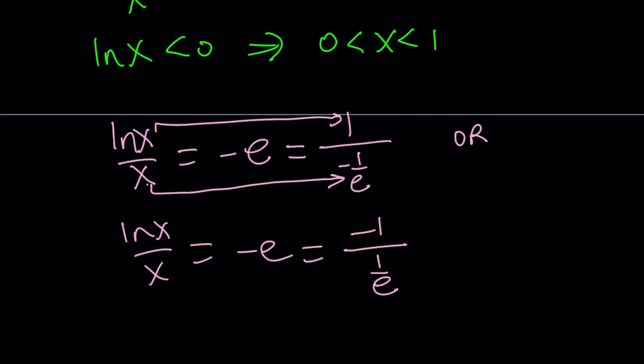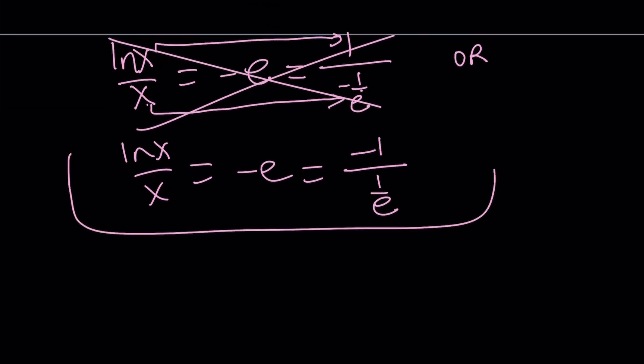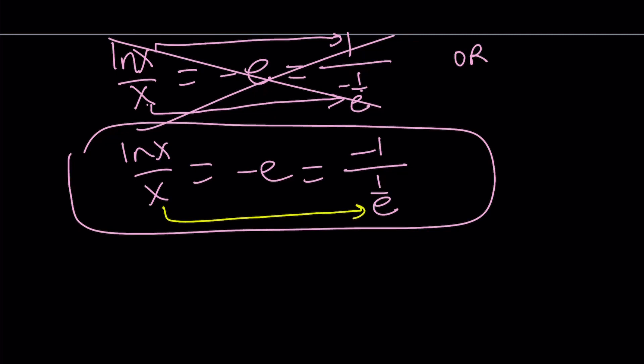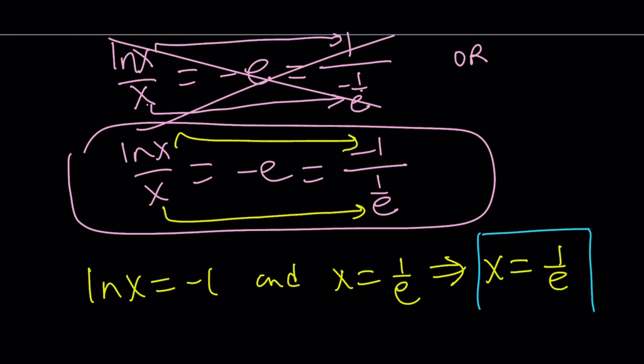Also, you don't want x to be negative. You don't want x to be less than 0. So the first one is not going to work. We're going with the second one. Notice that in the second one, if x is 1 over e, ln x is also going to be negative 1. So we have that requirement. ln x equals negative 1 and x equals 1 over e implies x equals 1 over e. So we got x equals 1 over e as a solution because it satisfies the equation. But is that the only solution? How do we find out?